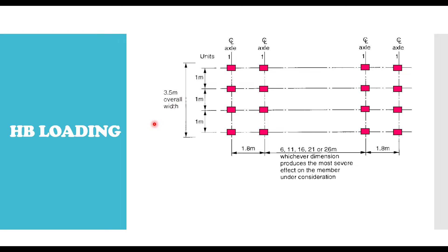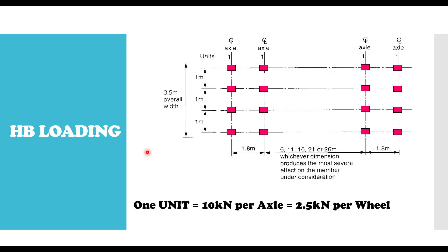So how do we estimate HB loading? HB loading is estimated in units, and you should know that 1 unit of HB is equivalent to 10 kN per axle. We have 4 axles for each HB vehicle, and each axle has 4 wheels. So if you are using 1 unit of HB, that means the total load on one axle is 10 kN, which means each of the four wheels will be carrying 2.5 kN per wheel.